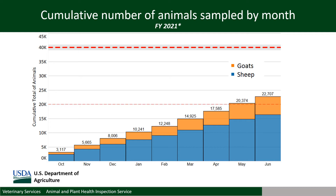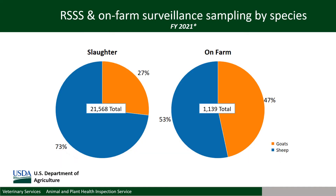About 2.5 times more sheep than goats are surveilled in the scrapie eradication program. The ideal ratio based on population is about 2 to 1, and we are working to increase surveillance in goats. These charts show the distribution of sampling so far this fiscal year between the RSSS and on-farm sampling, with a breakdown of goats and sheep being sampled. The distribution of goats and sheep is almost even for on-farm surveillance, while more sheep than goats are sampled through RSSS.